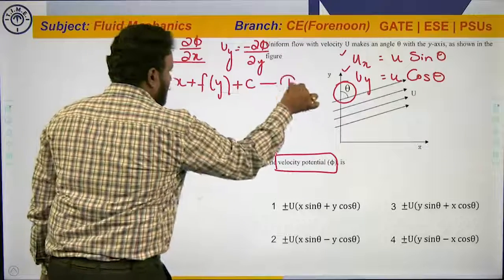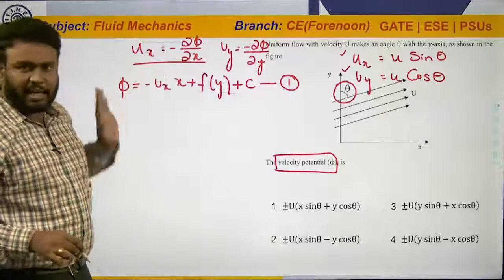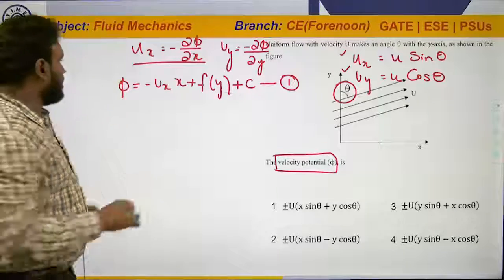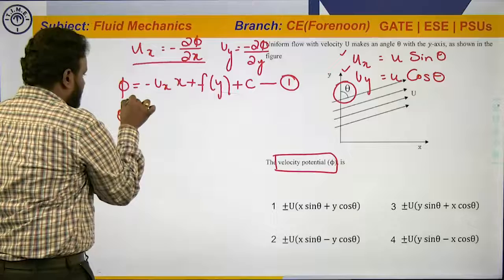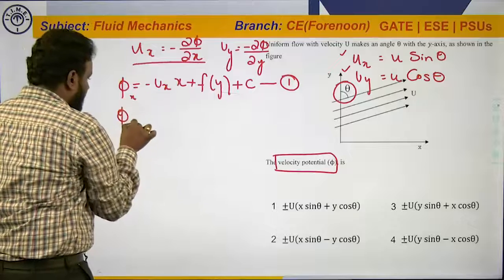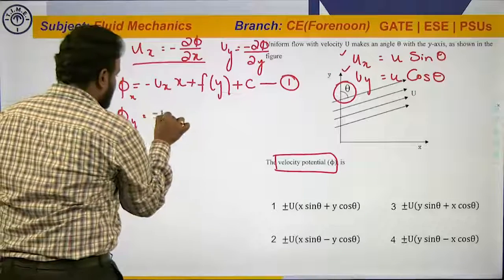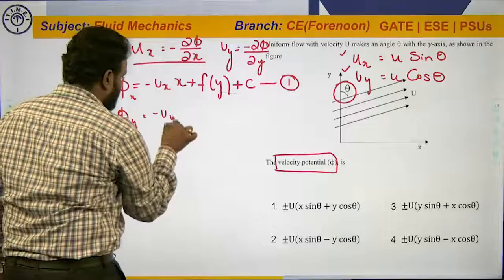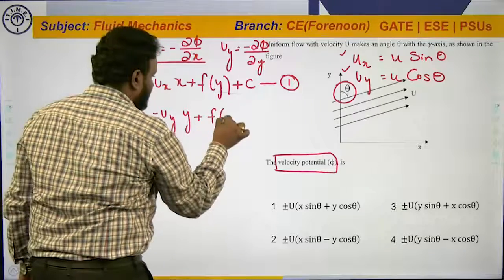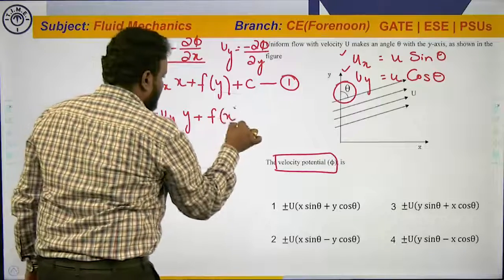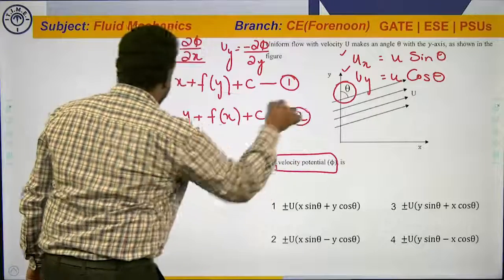Let this be equation number 1 — simply finding the value of phi by integrating the above equation. Integrating with respect to y gives us: φ = −uy · y + f(x) + c, and let this be equation number 2.